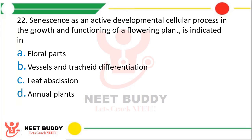Question number 22: Senescence as an active developmental cellular process in the growth or functioning of a flowering plant is indicated in — Option A: Floral parts. Option B: Vessels and tracheid differentiation. Option C: Leaf abscission. Option D: Annual plants. The correct answer is option C, i.e. leaf abscission.